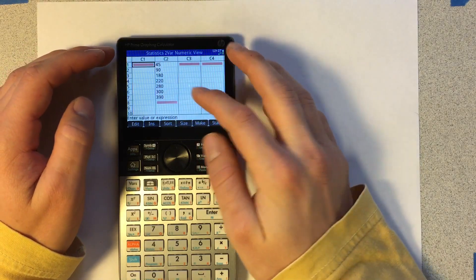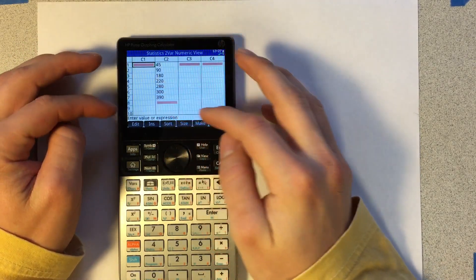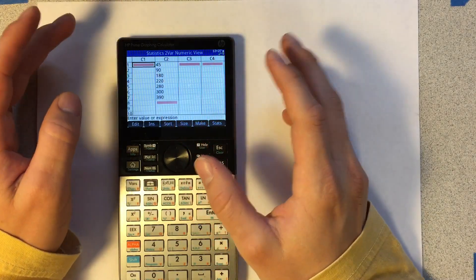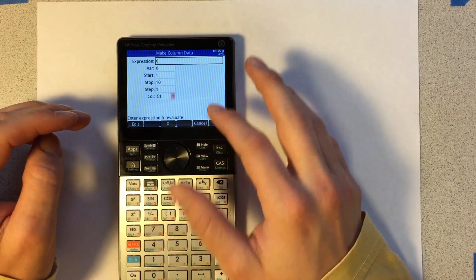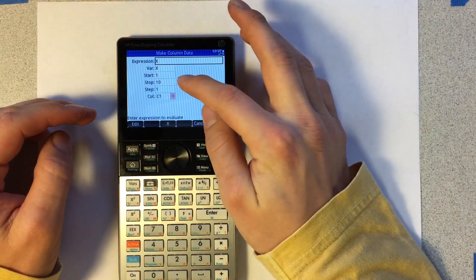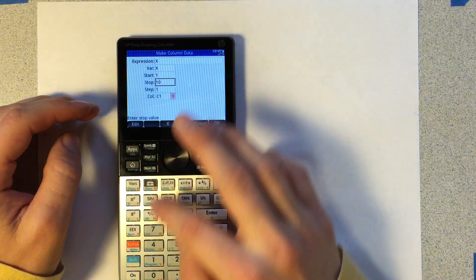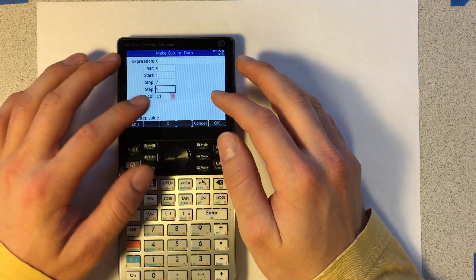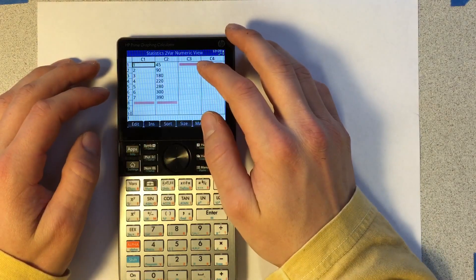Now I've already imported or put in a list of data, seven data points along for column C2. But for C1 I just want to go one through seven, so what I'm going to do is say make, and I'm going to say for the expression x where the variable is x, start at one, stop at seven, step of one. We're going to save that as column one, so now we have column of one through seven.